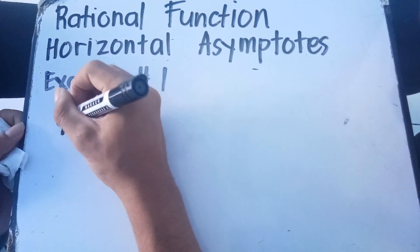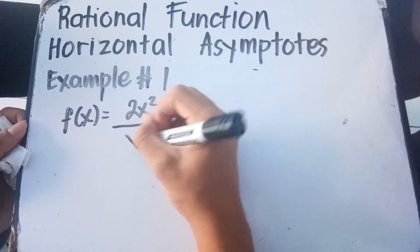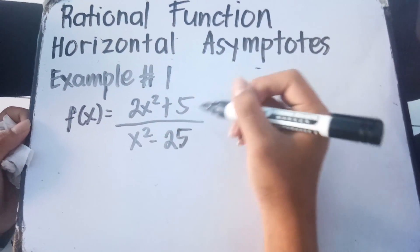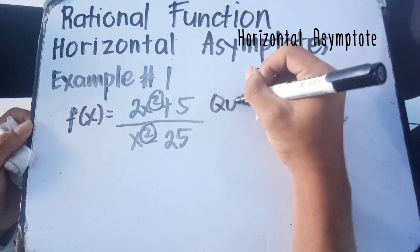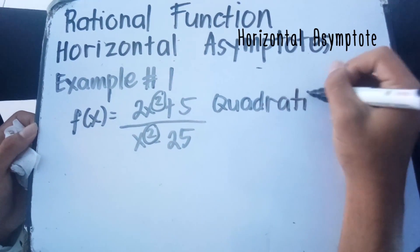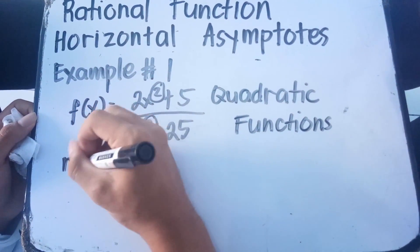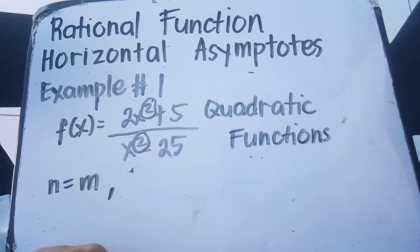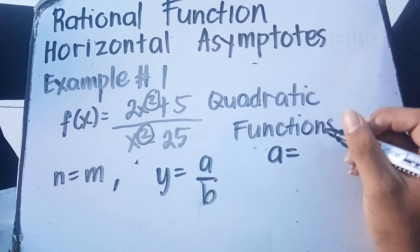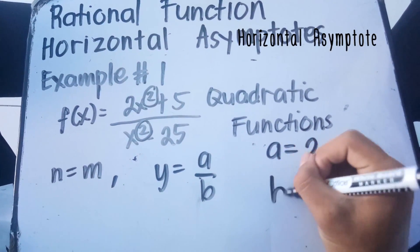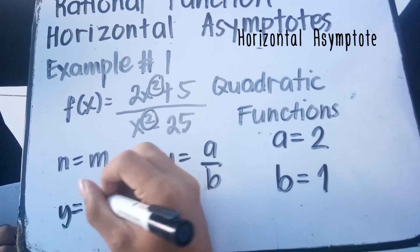Consider f of x equals 2x squared plus 5 over x squared minus 25. The numerator and denominator have the same degree, which is 2, so n equals m. We use the rule y equals a over b, substituting the leading coefficient of the numerator, which is 2, and the leading coefficient of the denominator, which is 1. Therefore, the horizontal asymptote is y equals 2.